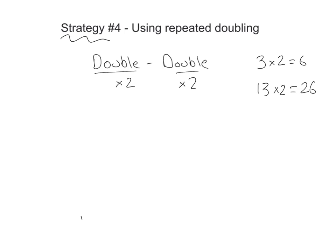Now this works whenever you're multiplying something by four, because four is just two times two. So double doubles work when you're multiplying by four. Let me show you an example.